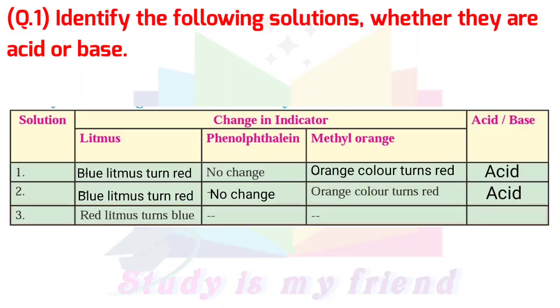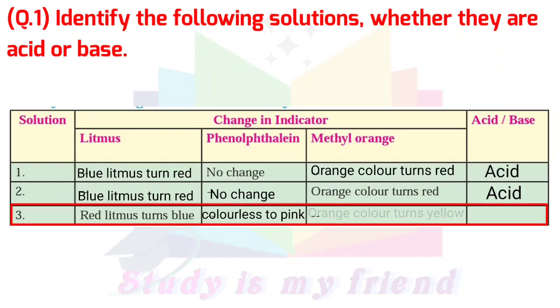Solution 3 - Red litmus turns blue, phenolphthalein changes from colorless to pink, methyl orange turns yellow. This is a base.